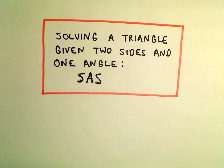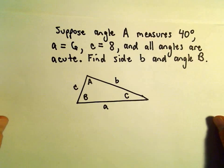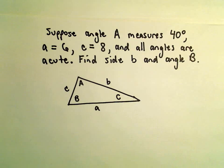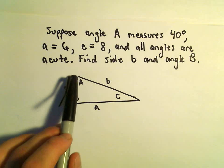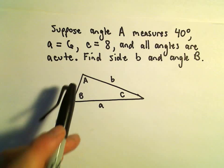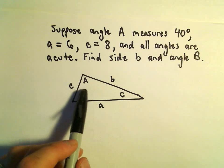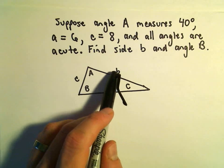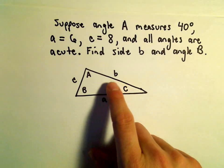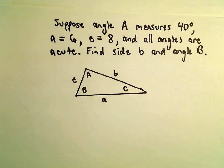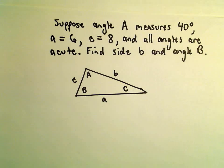In this video we're going to do an example of finding a missing angle and a missing side length. Suppose we've got our triangle here. We know that angle A measures 40 degrees, little a has length 6, and side length c is 8. We don't know angle C, we don't know angle B, and we don't know the side length for little b. What we're going to do is find side length b and angle B, and by default we're going to have to find angle C as well, so really we're going to figure out all the angles and side lengths in this example.